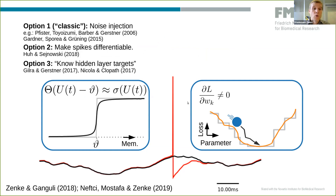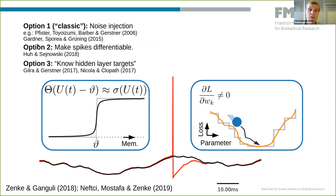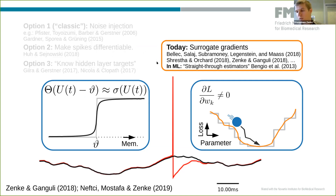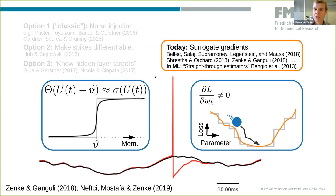People have thought about this for a long time. There are approaches that use noise injection, or pretending that spikes are actually differentiable — a more recent approach — or that you know the hidden layer targets, which allows other optimization tricks. Today's approach: I'll convince you that surrogate gradients are a very promising way forward. In machine learning, this has been known for a long time as straight-through estimators for training binary neural networks. We're using the same trick here.